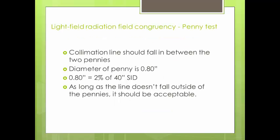To determine whether or not your penny test is acceptable, the collimation line should fall directly between the two pennies. The diameter of a penny is 0.8 inches, which happens to be 2% of a 40-inch SID — which is where we need our light field radiation field to be. As long as the line doesn't fall outside of the pennies and you can see only one penny and a portion of the other, your test is acceptable.